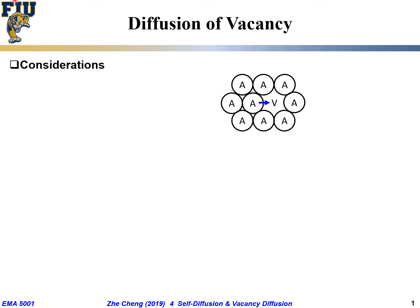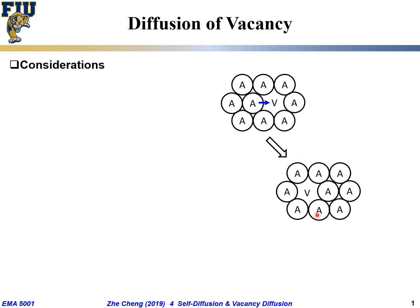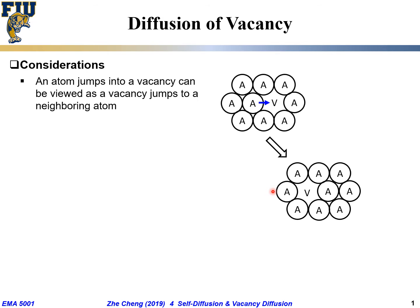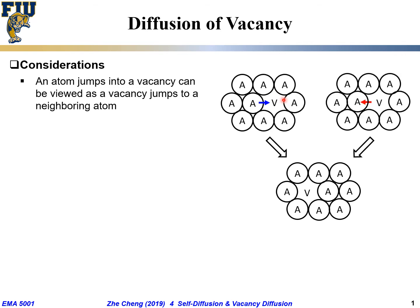As I draw here, pure A with A, vacancy, and the A atom would jump into the vacancy — starting position, final location. A goes to the vacancy, and in a way you can view this as: if an atom jumps into the vacancy, you can view it as if the vacancy jumps to the atom in the opposite direction. The net result for this single jump is the same.